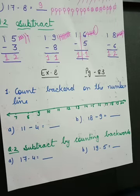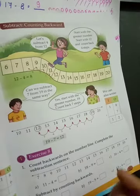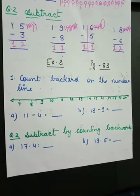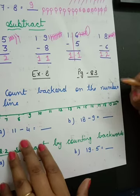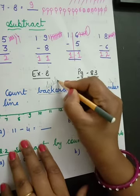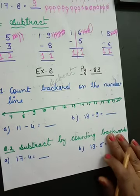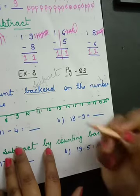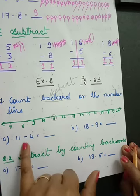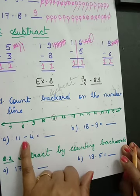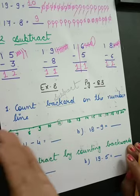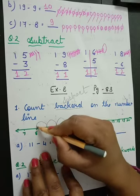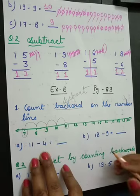Open page number 83. Count backward on the number line — backward means subtract. First: 11 minus 4. Where is 11? Go 4 steps backward: 1, 2, 3, 4. So what answer you have got? Seven.